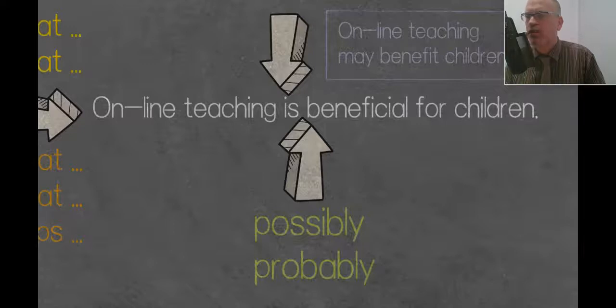So in the structure that we have here, the white sentence. Online teaching is beneficial for children. We are going to put it between the is and beneficial. Is possibly beneficial. There are other places we can put this. We can put it before, between the online teaching and the is. Or we can put it at the start of the sentence. And there are other places. But the main place I would like you to focus on is in the middle there.